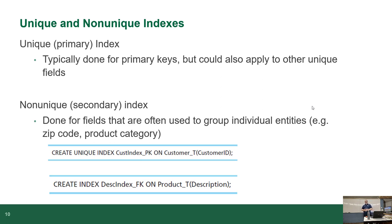You may come across documentation that talks about primary indexes — unique indexes are usually done for primary keys but technically you could apply them to other fields you want to keep unique, like email address or phone number. Non-unique indexes are often done for fields frequently used to search or group data — things you look up regularly. Phone number, email address, city, postal code or zip code, product categories — that kind of thing.